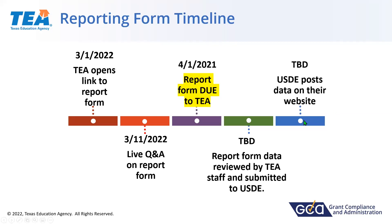Once we submit the data, USDE will do their own set of data checks, may ask for corrections, and then they are going to post every school district's data on their website. There are still some narrative questions you have to respond to, and you want to have someone review those responses — misspelled words or grammatically incorrect responses will eventually end up on USDE's website. All the data you're reporting has to be accurate, and you need to be maintaining the documentation locally. It will be publicly reported on USDE's website.